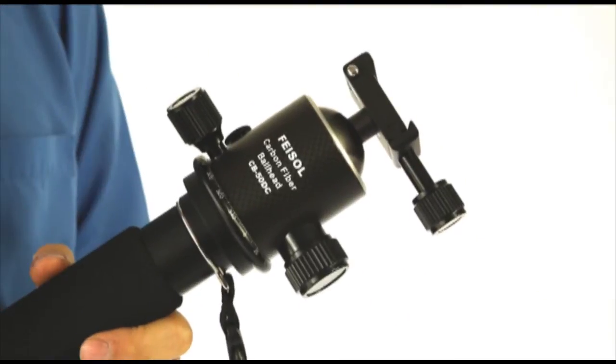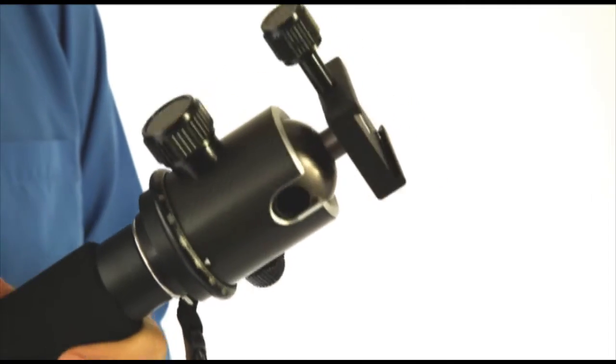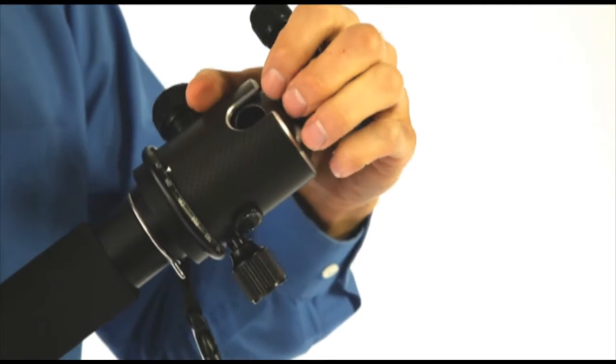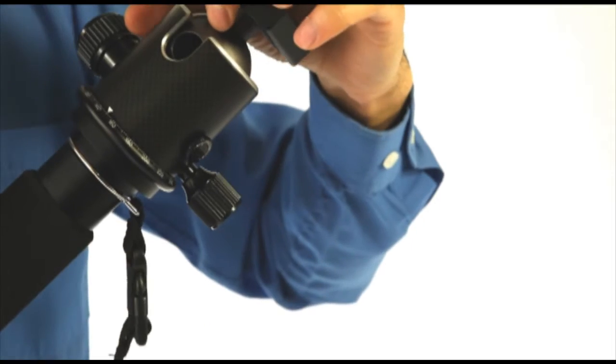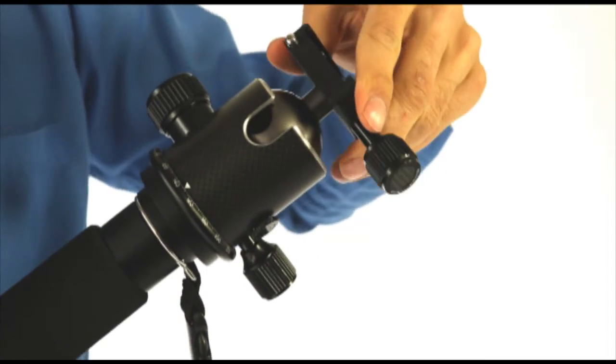The Faisal CB50DC has a lightweight aluminum body and a carbon fiber coating. And furthermore, to help reduce the weight, the center ball has been hollowed out but yet still provides smooth rotation and motion.